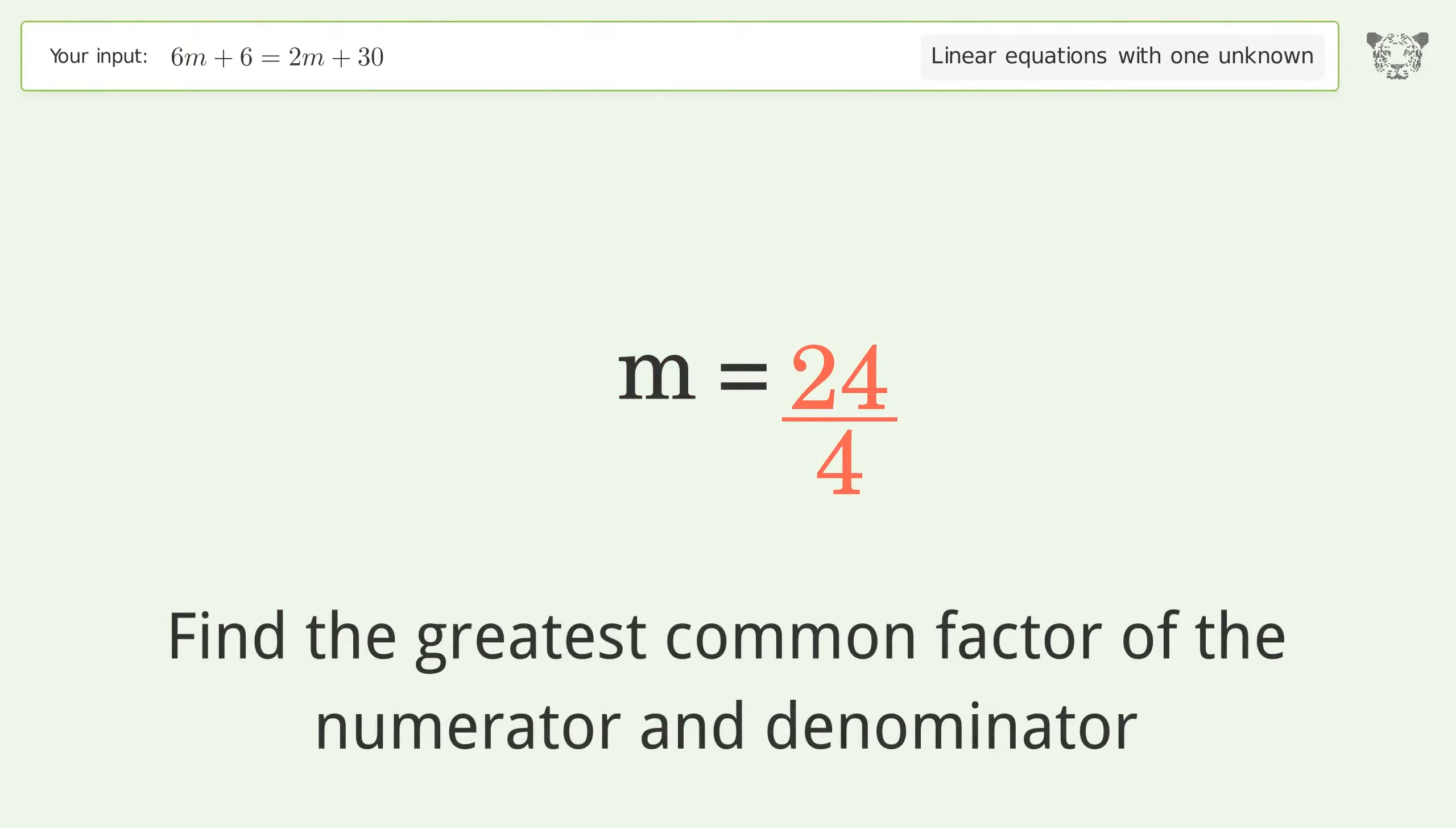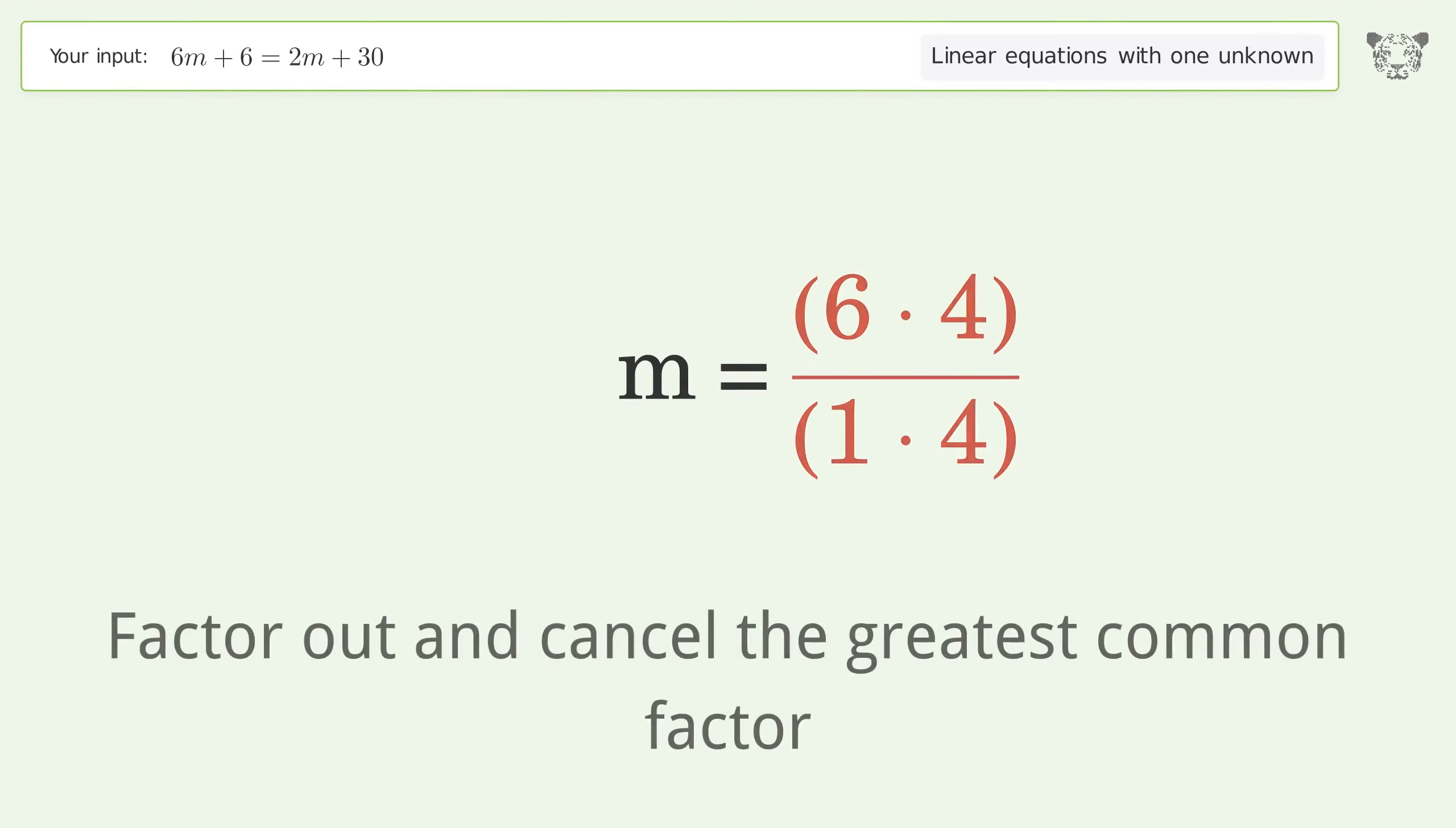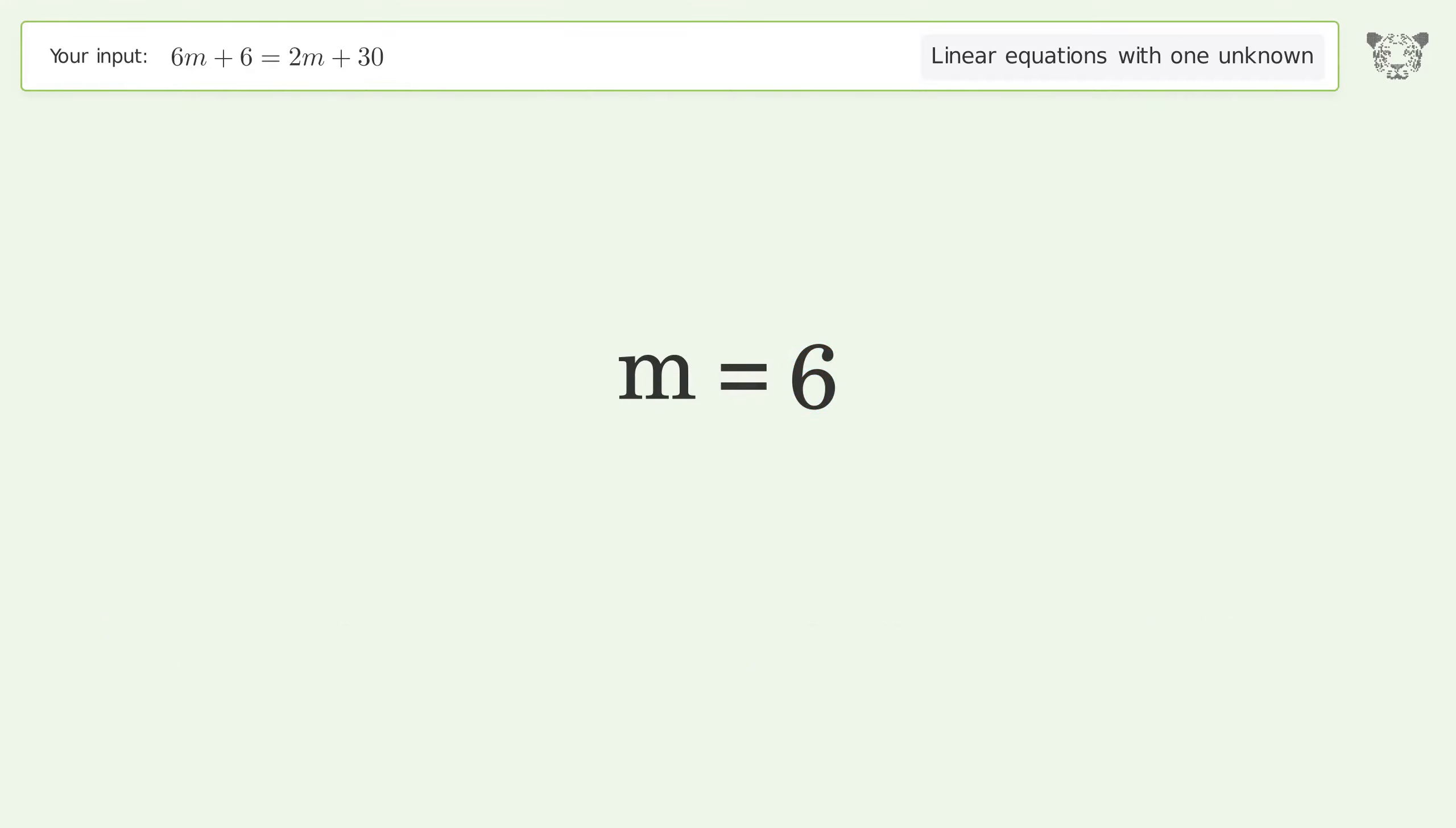Find the greatest common factor of the numerator and denominator. Factor out and cancel the greatest common factor. And so the final result is m equals 6.